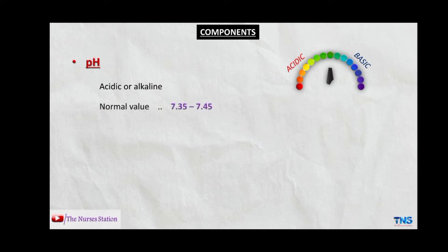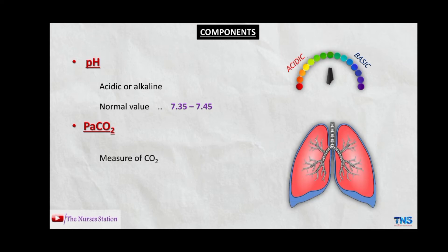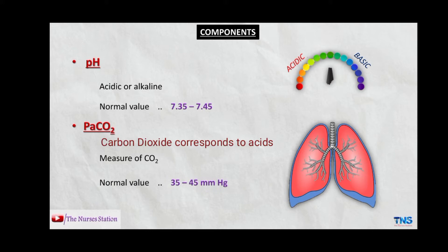The normal value for pH of arterial blood is 7.35 to 7.45. The next is PaCO2, which is the measure of carbon dioxide. The amount of carbon dioxide in our body is regulated by the lungs. The normal value for PaCO2 is 35 to 45 mmHg.